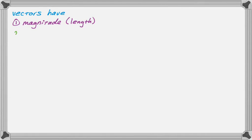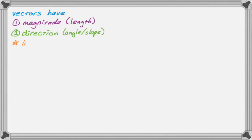Vectors also have a direction. Direction is a little bit harder to talk about, but it's really easy to see when you're looking at it, because your vector is going to look like an arrow, and it's going to be pointing in a certain direction. That's the direction. So vectors really just look like arrows when you're drawing them. Let's draw a couple to show you what they are.